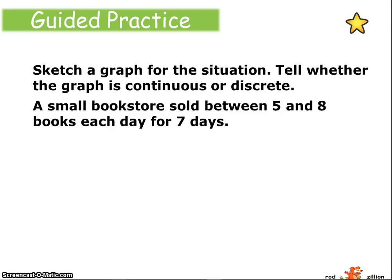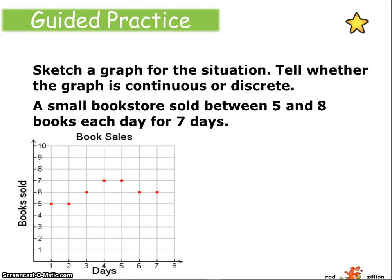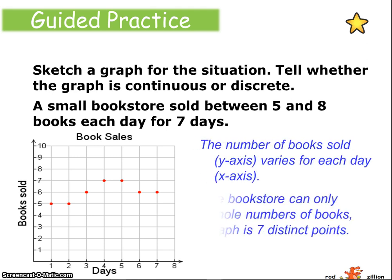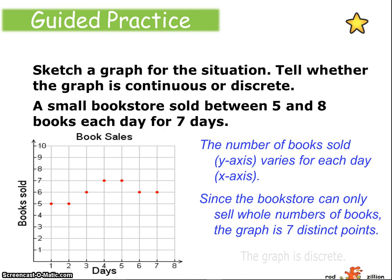Welcome back. So a small bookstore sold between five and eight books each day for seven days. That graph may look something like this. We're comparing the number of books sold over the course of days. And you can't sell half a book. So this is going to be a discrete graph because we're only talking about this whole number of books.